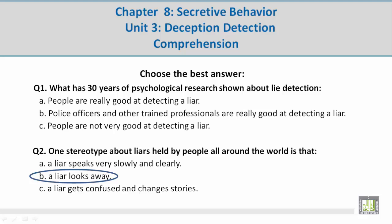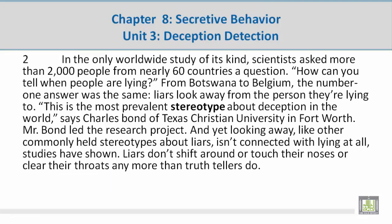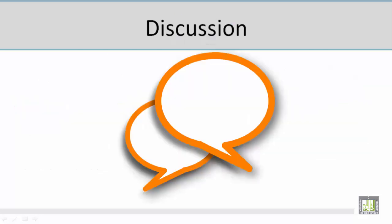Question number 2: One stereotype about liars held by people all around the world is that B — a liar looks away. The paragraph reads: from Botswana to Belgium, the number one answer was the same — liars look away from the person they are lying to.